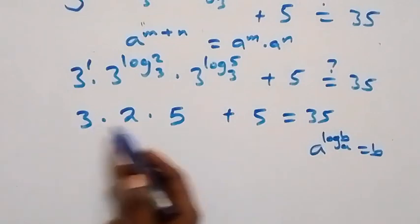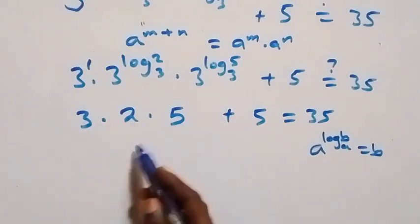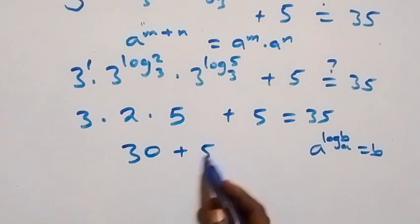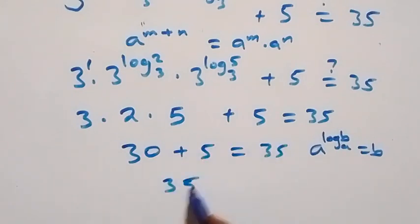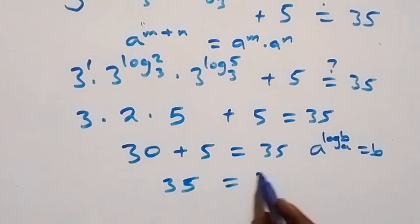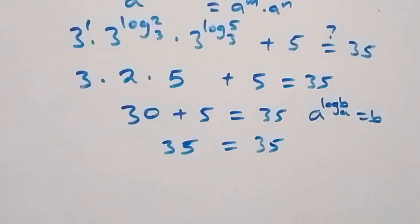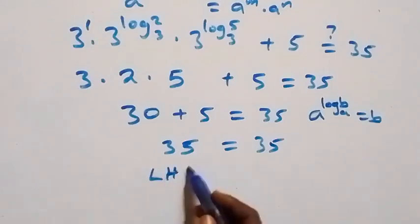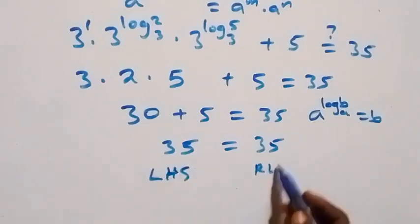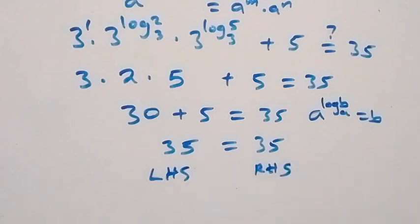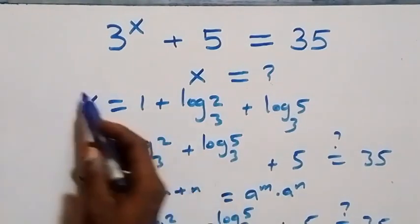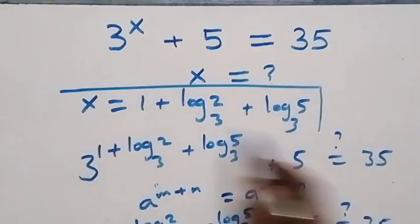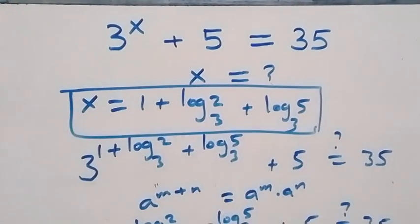That is 3 times 2 equals 6, and 6 times 5 equals 30. Then 30 plus 5 equals 35, which equals 35. Left hand side equals right hand side, and hence x equals 1 plus log₃2 plus log₃5 satisfies the given problem.